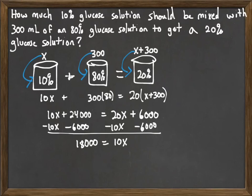And then, we just need to solve that equation for X. So, we divide both sides by 10. And then, we get X equals 1,800 milliliters. We're going to need 1,800 milliliters of the 10% solution.